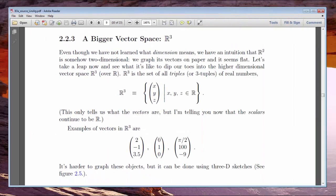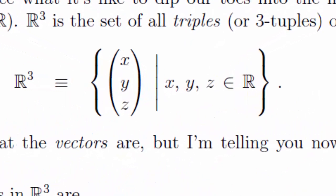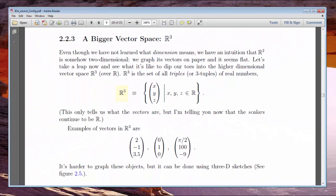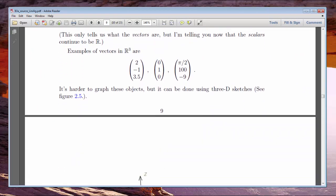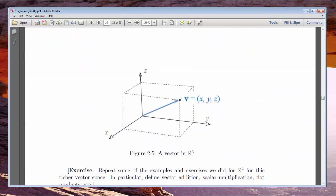If you get bored with R2, you can get a different vector space by adding a third real number to our column vectors and give the new space the name R3, or Euclidean 3 space. R3 models our three-dimensional world, so the pictures have a 3D, or volumetric, quality to them.